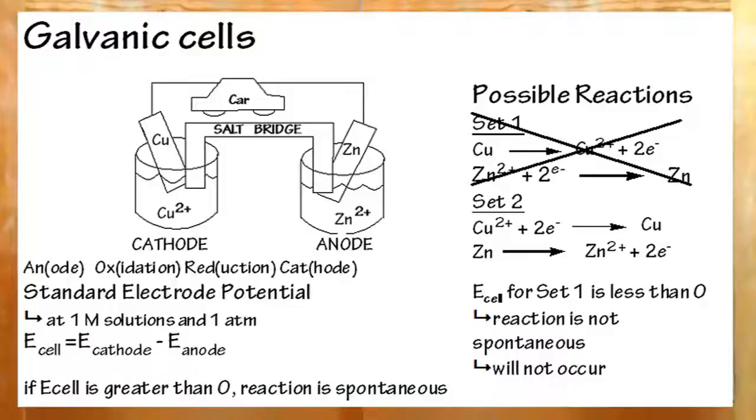To recap, galvanic cells are made up of a cathode and anode. Oxidation will occur at the anode. Reduction will occur at the cathode. An-ox-red-cat. There will be metals, and they will be dipped in a solution containing that metal as an ion. Electrons will flow through a wire that connects both metals from one to the other. There will also be a salt bridge. The salt bridge will contain ions that don't react. These will maintain the neutrality of these two. If either of them don't become neutral in charge, then the reaction stops occurring.